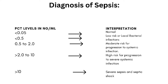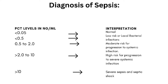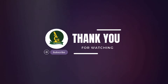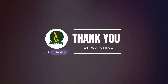Here we can interpret the results in conjunction with the clinical history of the patient. We can also assess how severe the infection is from the results. If the PCT range is less than 0.5 ng/mL, the patient is healthy or at low risk. From 0.5 to 2, the patient is at moderate risk for progression to sepsis. PCT ranging from 2 to 10 indicates higher risk to sepsis, and a level more than 10 indicates severe sepsis or septic shock.